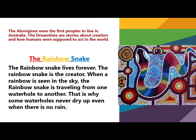The Rainbow Snake lives forever. The Rainbow Snake is the creator. When a rainbow is seen in the sky, the Rainbow Snake is traveling from one waterhole to another. That is why some waterholes never dry up, even when there is no rain.